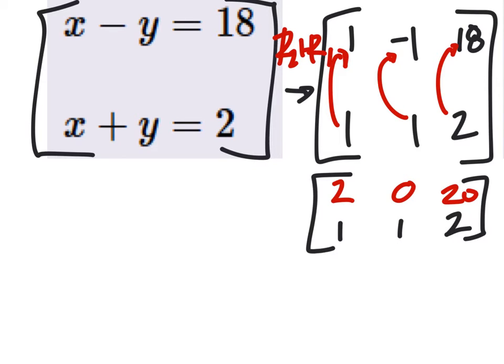So that kind of eliminated a variable right there, right? If we wanted to change this back into an equation, we'd have 2x plus 0y equals 20. But we don't really need to put plus 0y. And you could solve from here, right?